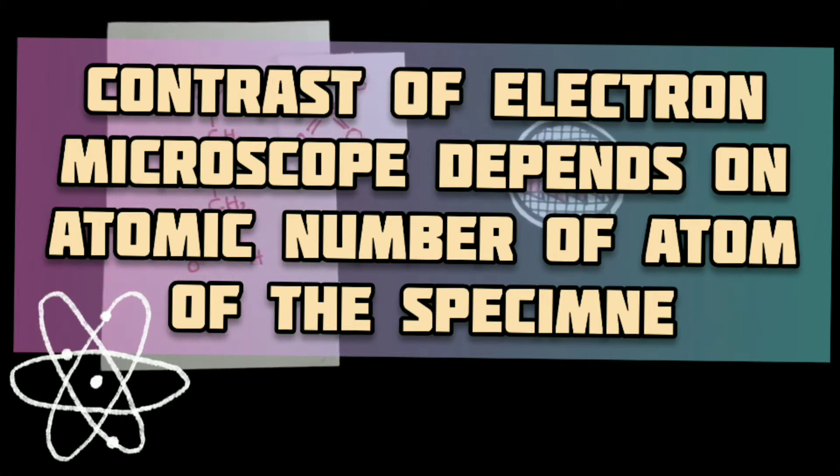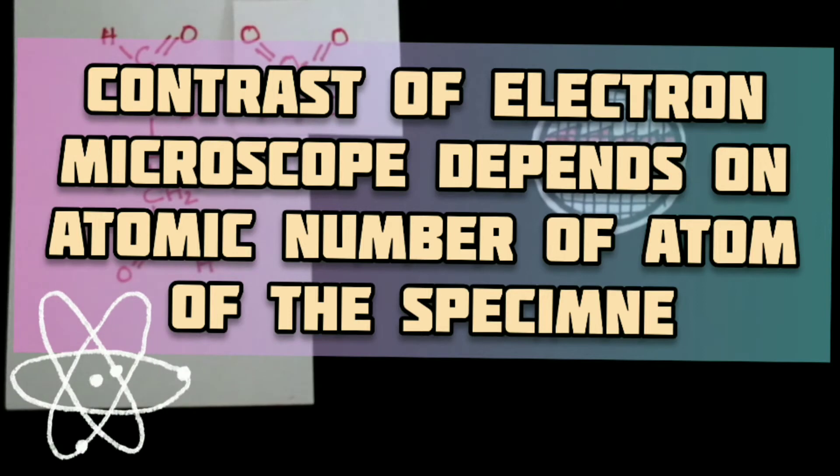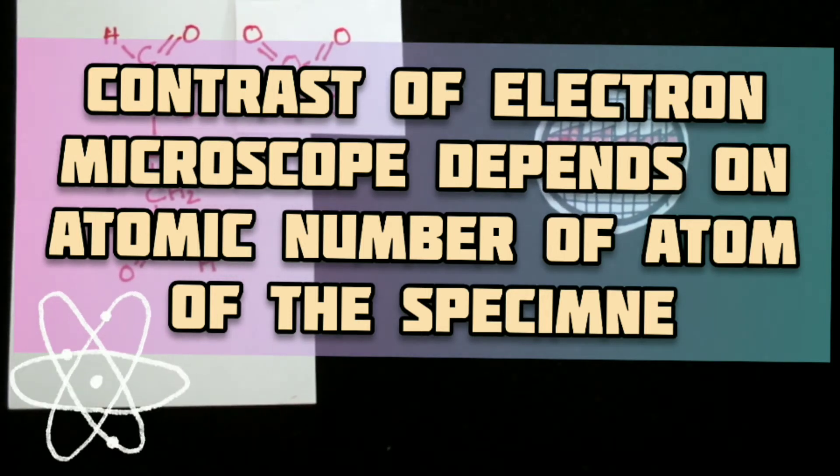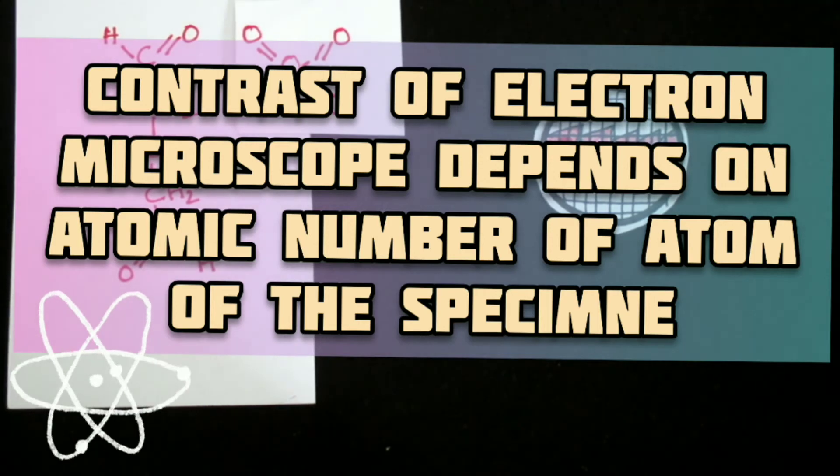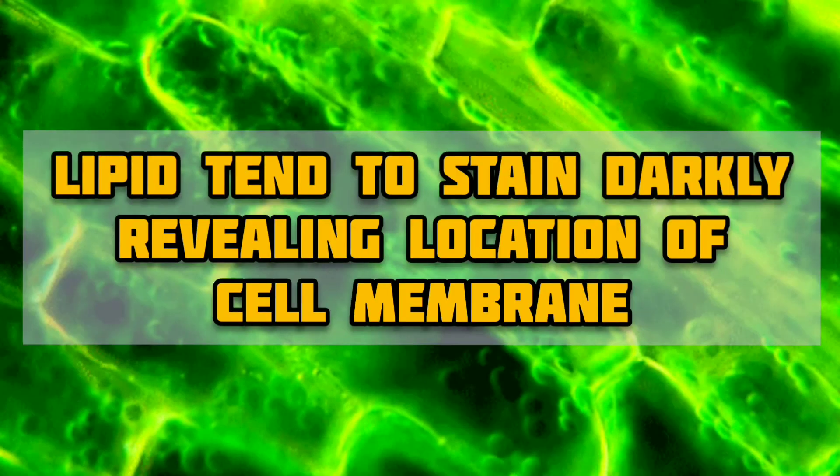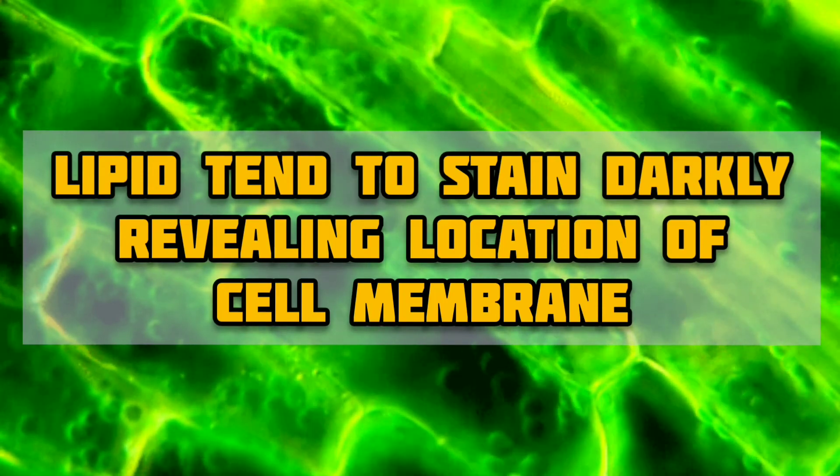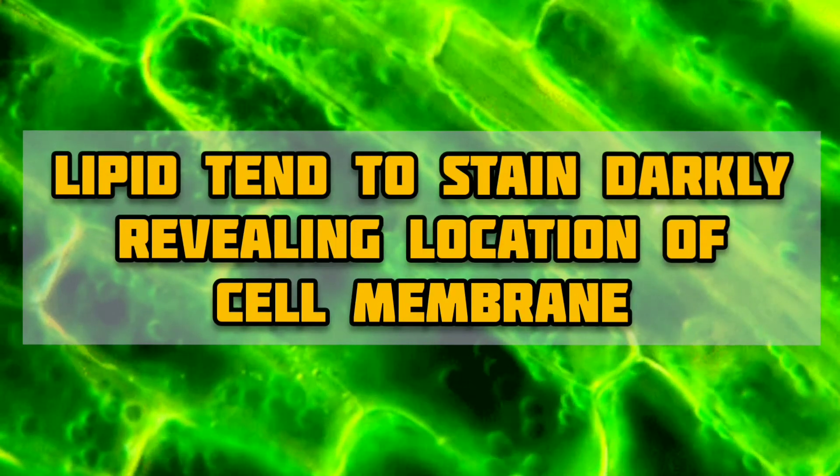As biological tissues are composed of atoms of very low atomic number, they are usually impregnated with the salts of heavy metals such as uranium and lead. For example, lipids tend to stain darkly after osmium fixation, revealing the location of the cell membrane.